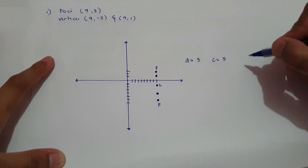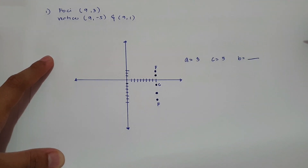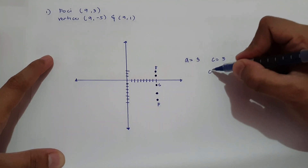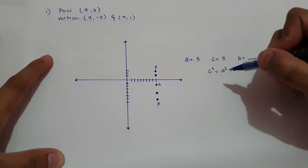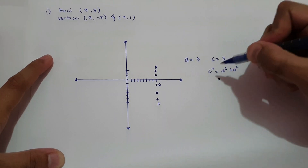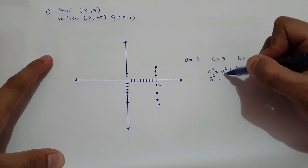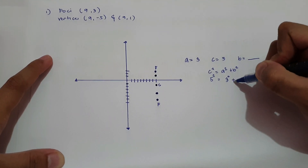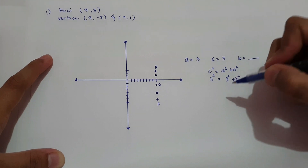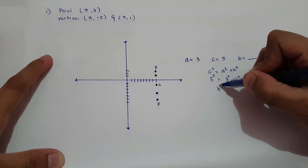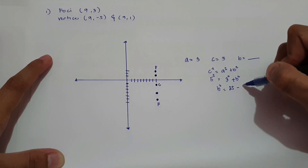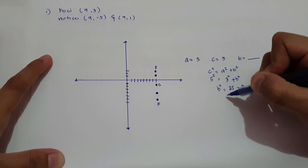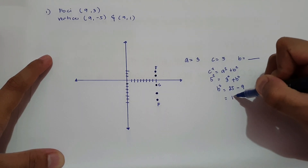Now let us determine the value of b. To find the value of b, we use the formula c² = a² + b². The value of c is 5, so 5² = 3² + b². To simplify, b² = 25 − 9, therefore b² = 16.